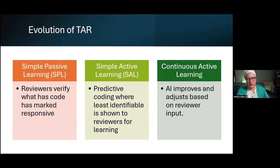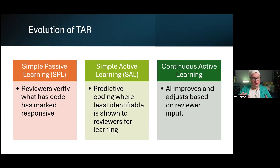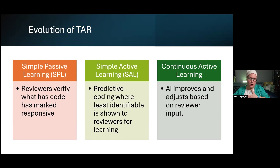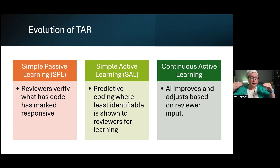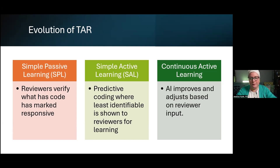Then simple active learning was introduced — this was predictive coding where the least identifiable content is shown to reviewers in order to learn. Instead of just taking what's marked as good or not, it would show something completely unmarked and ask, is this what you want? If that was discarded, it would use that feedback to become smarter about what it was showing.